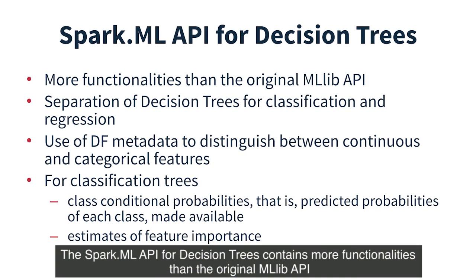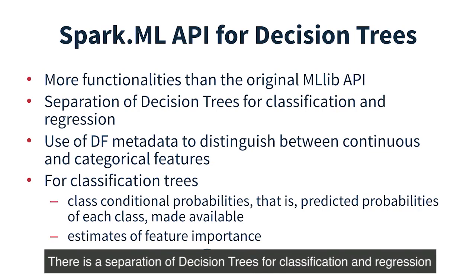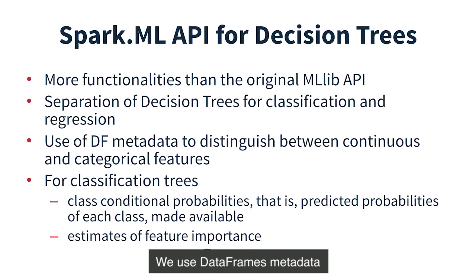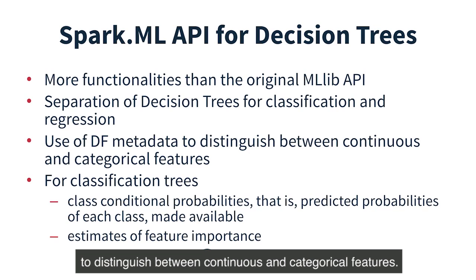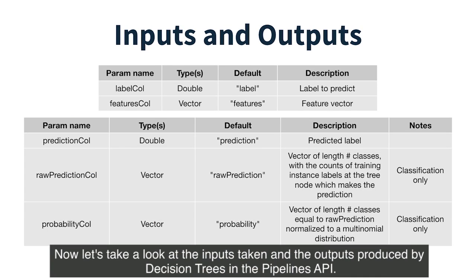The Spark ML API for Decision Trees contains more functionalities than the original MLlib API. There is a separation of Decision Trees for classification and regression. We use DataFrame's metadata to distinguish between continuous and categorical features. Now let's take a look at the inputs taken and the outputs produced by Decision Trees in the Pipelines API.